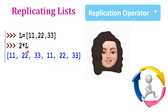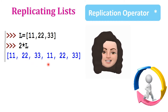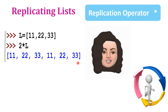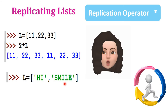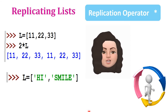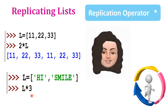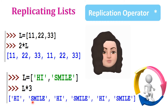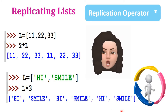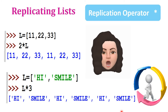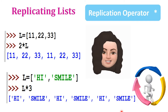The list [11, 22, 33] will be repeated twice — you can see [11, 22, 33, 11, 22, 33]. Let's create another list L equal to ['hi', 'smile']. I want this list repeated, so I give L * 3, which gives ['hi', 'smile', 'hi', 'smile', 'hi', 'smile']. The integer value can be given either on the left side or the right side of the list. So the replication operator is asterisk, used to repeat a list a specified number of times.